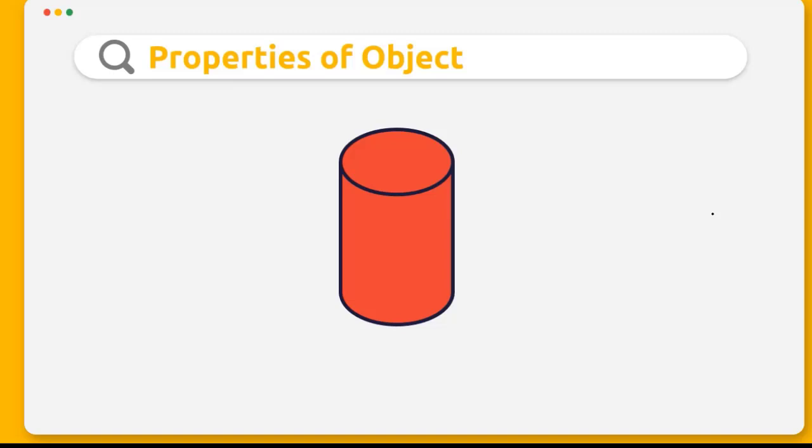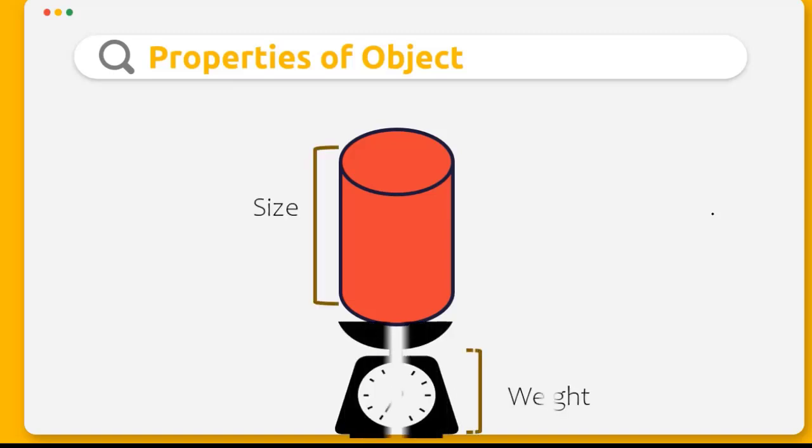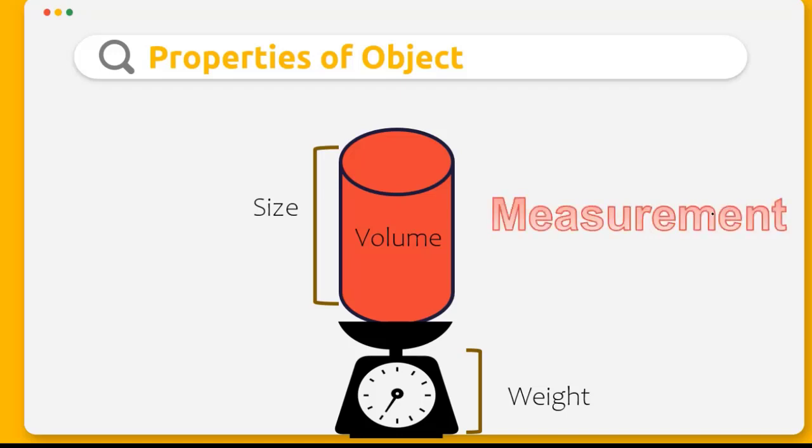Objects have different physical properties like size, weight, and volume. The whole point of measurement is to quantify those properties, which means expressing them as a number, or we can call it measurement.